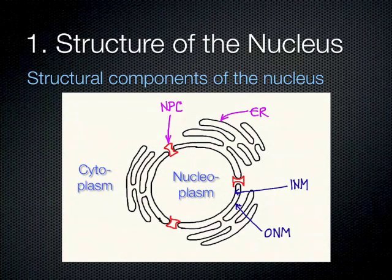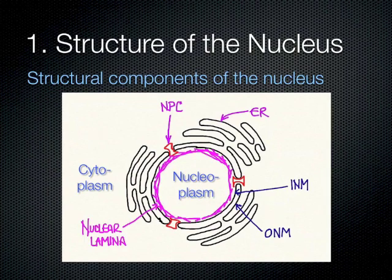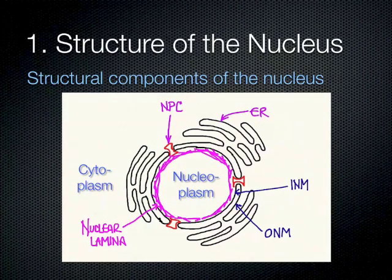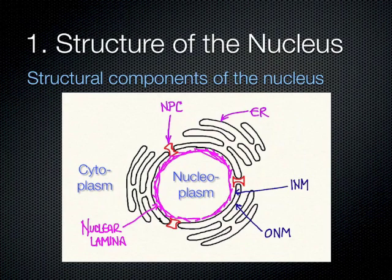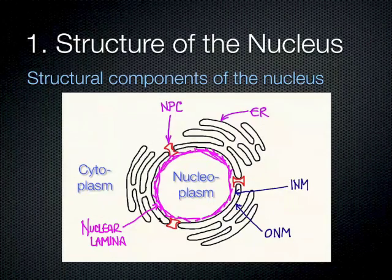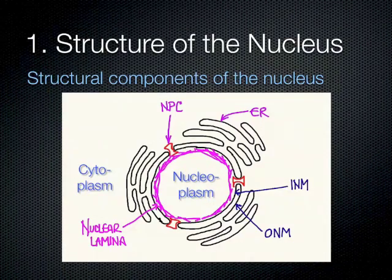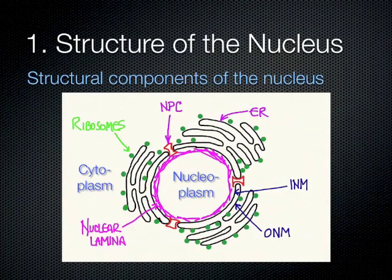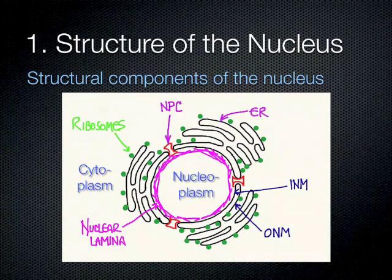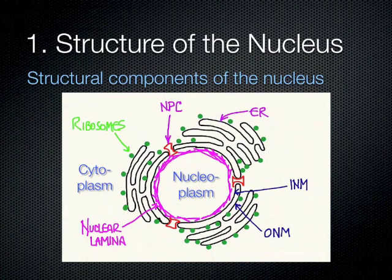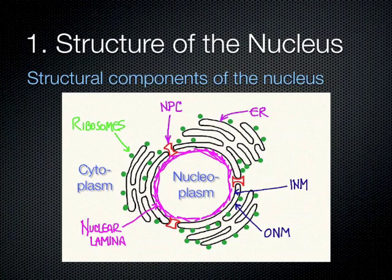Right under the nuclear envelope, we have a support structure formed by small fibrillar structures called the nuclear lamina. Attached to the outer nuclear membrane, as well as to the membranes of the ER, we find a large number of ribosomes. This indicates that, attached to the nuclear membrane, you can actually have protein synthesis — ribosomes are places of protein synthesis.